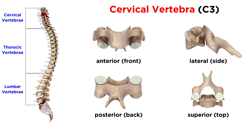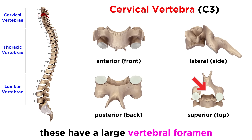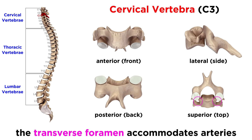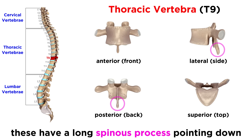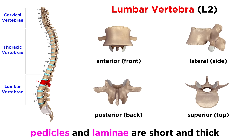The vertebrae vary slightly depending on where they are found in the column. Cervical vertebrae have a spinous process that is very short, a vertebral foramen that is large, and an additional transverse foramen to accommodate vertebral arteries. Thoracic vertebrae have a spinous process that is long and points down, and they also exhibit structures called demifacets which connect to the ribs. Lumbar vertebrae, being much larger, have pedicles and laminae that are short and thick, as well as other slight discrepancies.